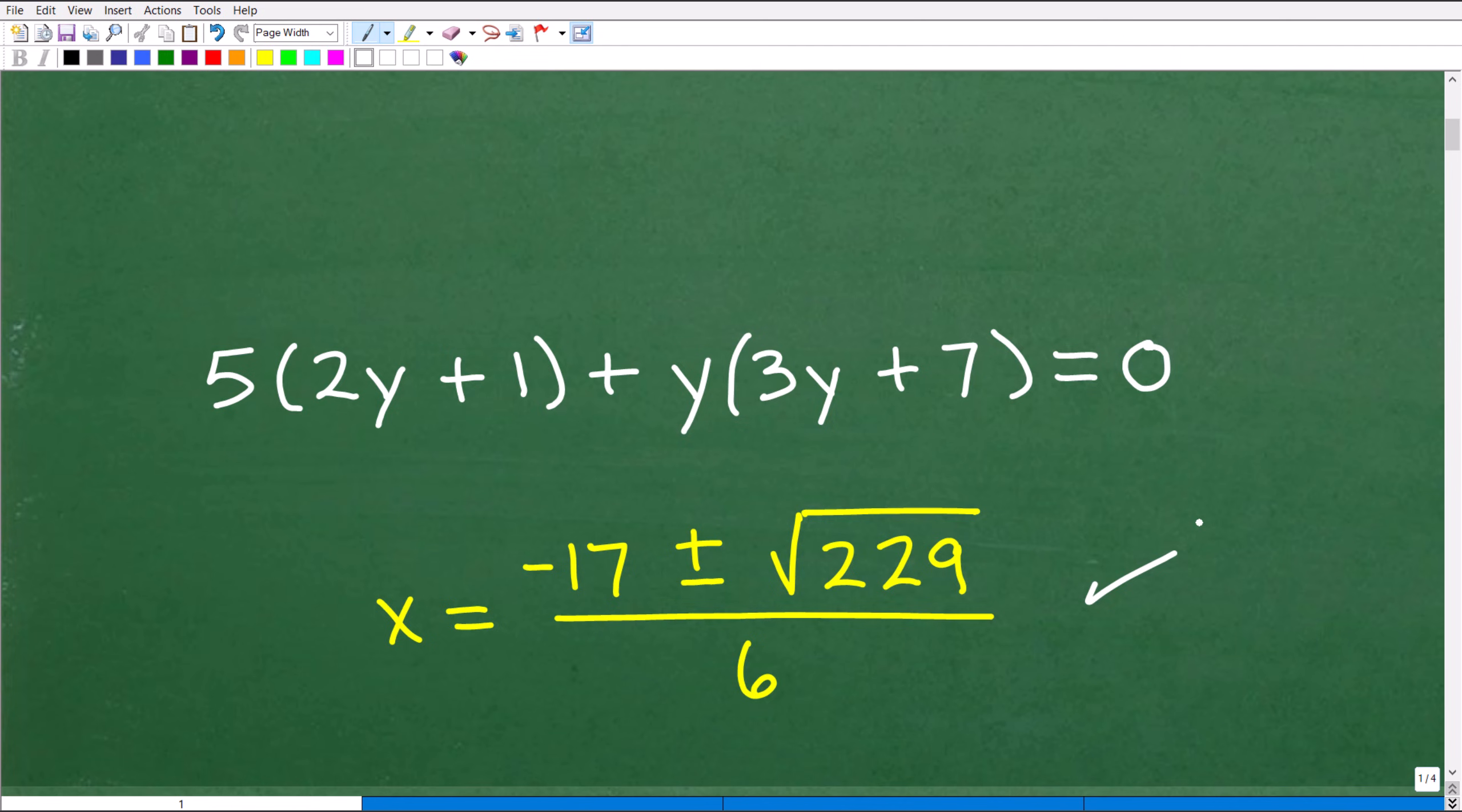What we're dealing with here is a quadratic equation. There's two solutions here. The solutions are broken up as negative 17 plus the square root of 229. If I went into my calculator and figured that out, then I would divide that by 6. That would be one solution. Then the second solution would be negative 17 minus the square root of 229 over 6. And of course, that's how you get your two unique solutions.